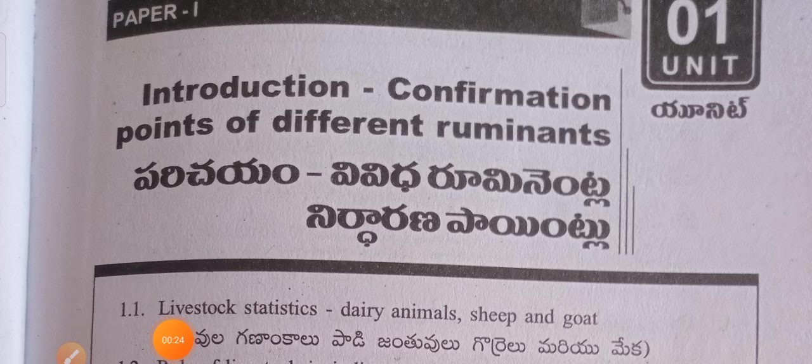This is according to unit wise, I am showing the important questions and answers. Unit wise, paper one only, ruminant production only, unit wise the important questions and answers. Introduction, confirmation points of different ruminants.